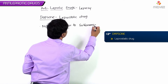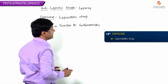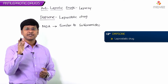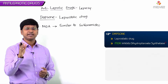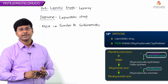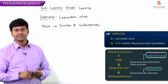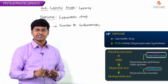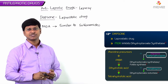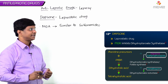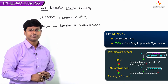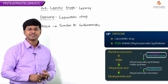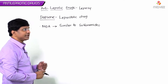Similar to sulfonamides, dapsone inhibits the enzyme dihydropteroate synthase — that is, folate synthase. By inhibiting dihydropteroate synthase, folic acid synthesis is inhibited. This is the mechanism of action of dapsone, which is similar to that of the sulfonamides.